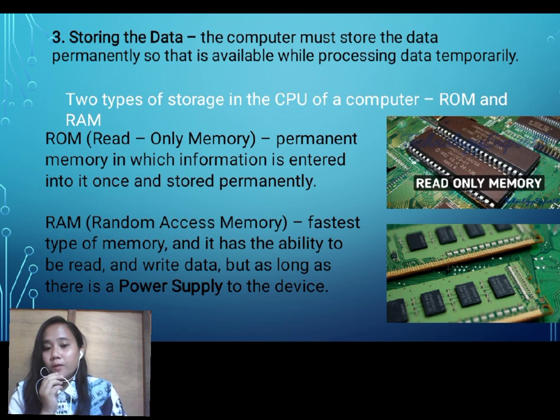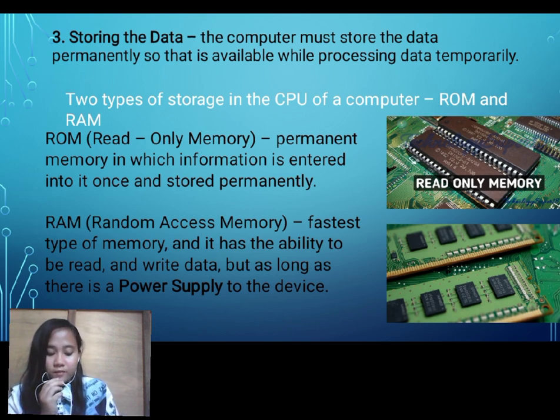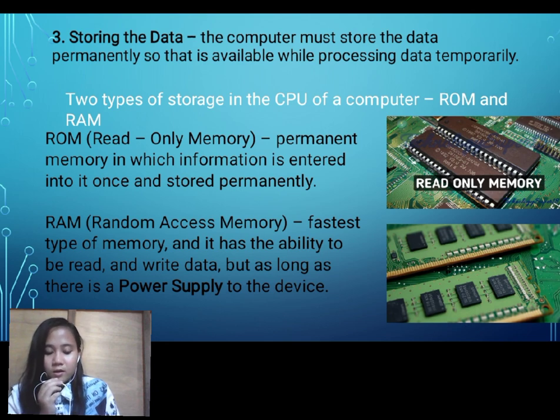The RAM, or Random Access Memory, is the fastest type of memory and has the ability to read and write data, but only as long as there is a power supply to the device. So the difference between the ROM and the RAM is that the RAM needs a power supply to function.